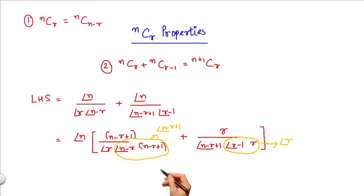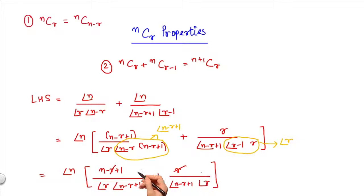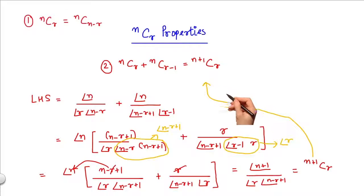Plugging in these values, since the denominator of both these terms is same, I can simply cancel out this R from this R and then combine this N plus 1 with this N factorial to get N plus 1 factorial in the numerator and I would have R factorial and N minus R plus 1 factorial in the denominator, which is nothing but N+1CR, which is equal to my right hand side, hence proved.